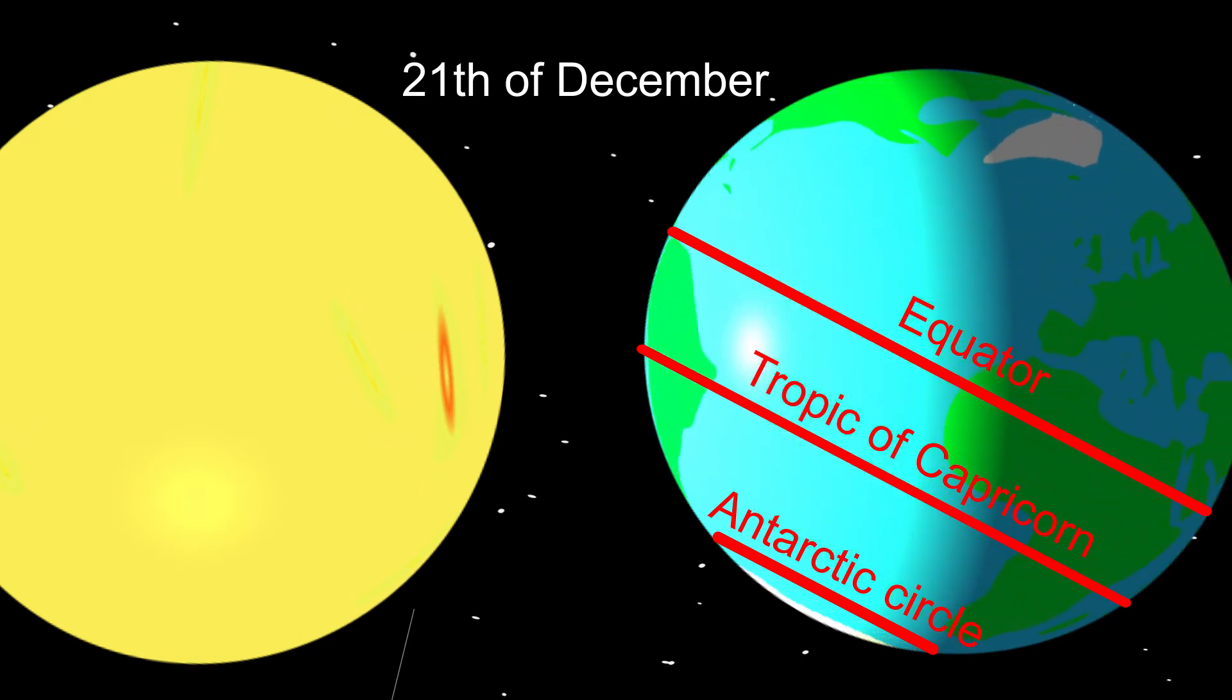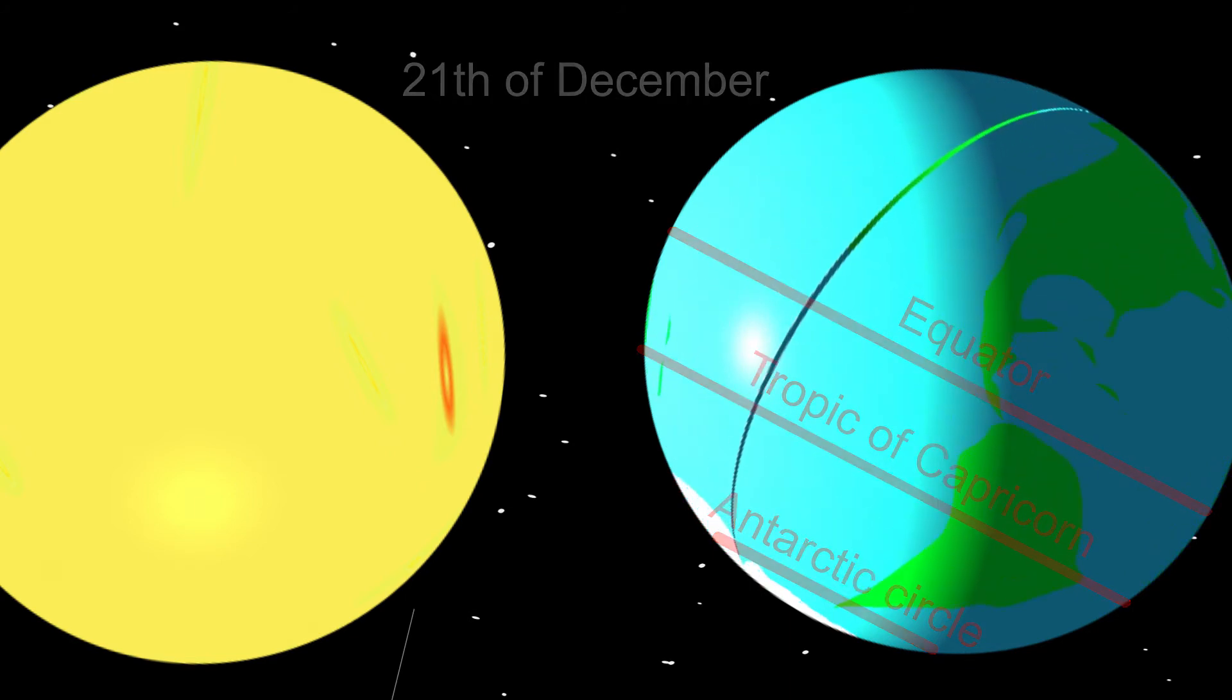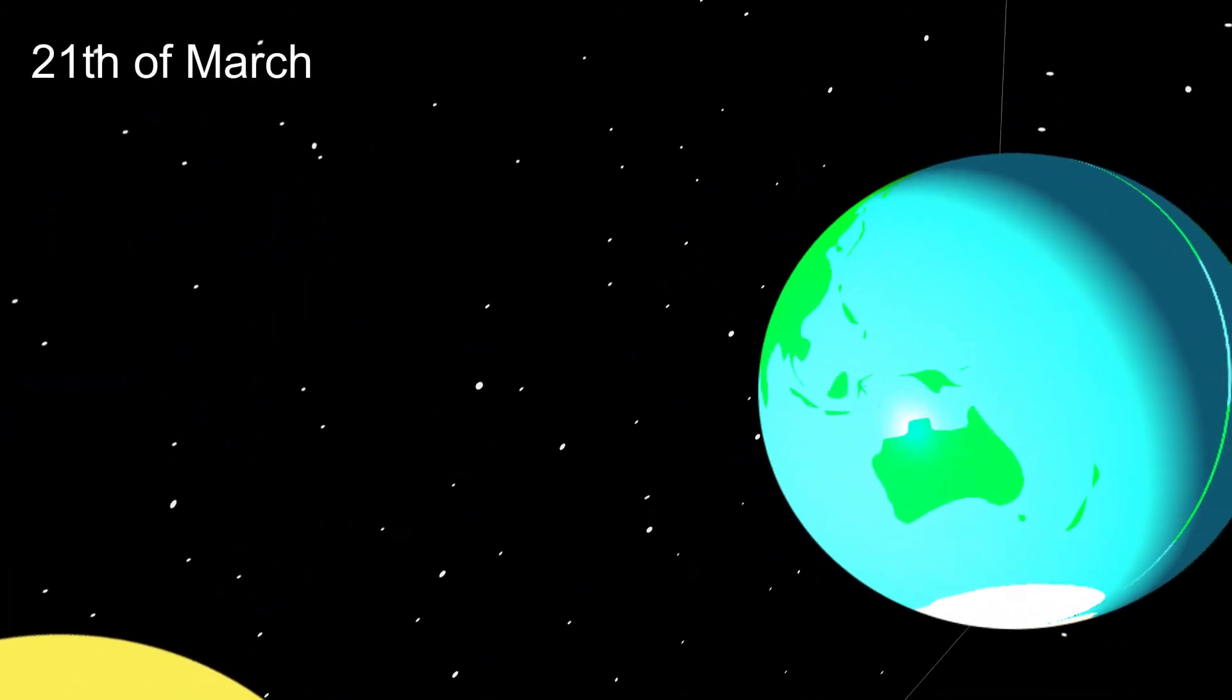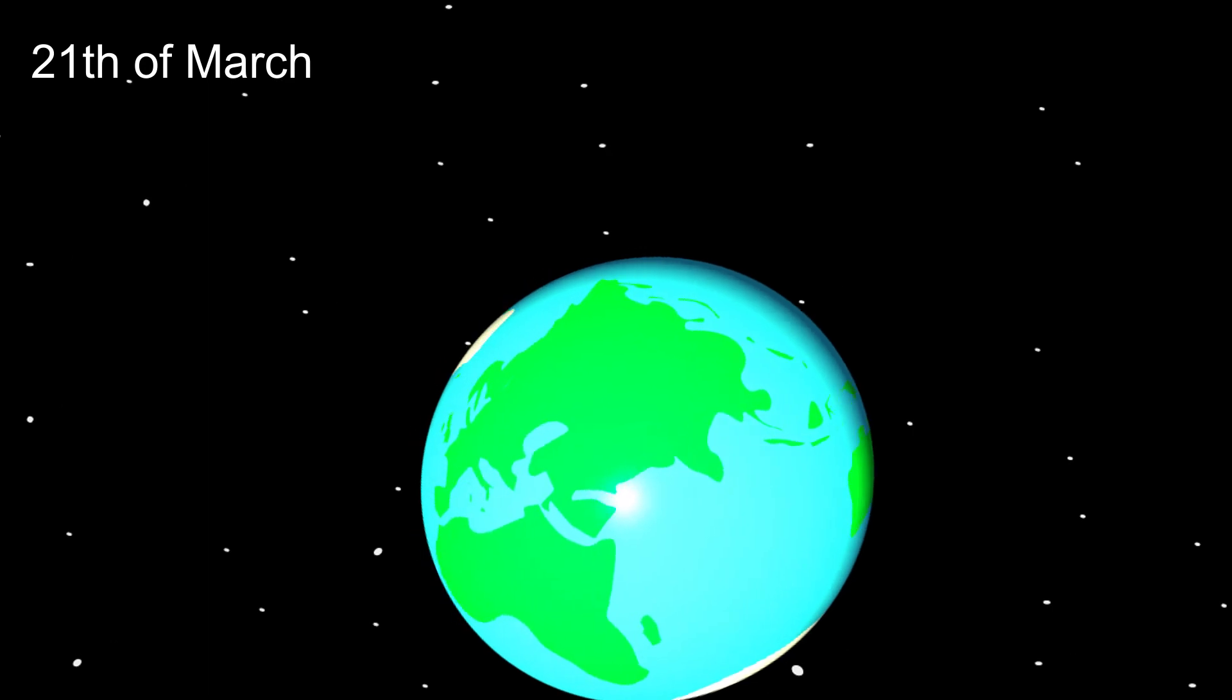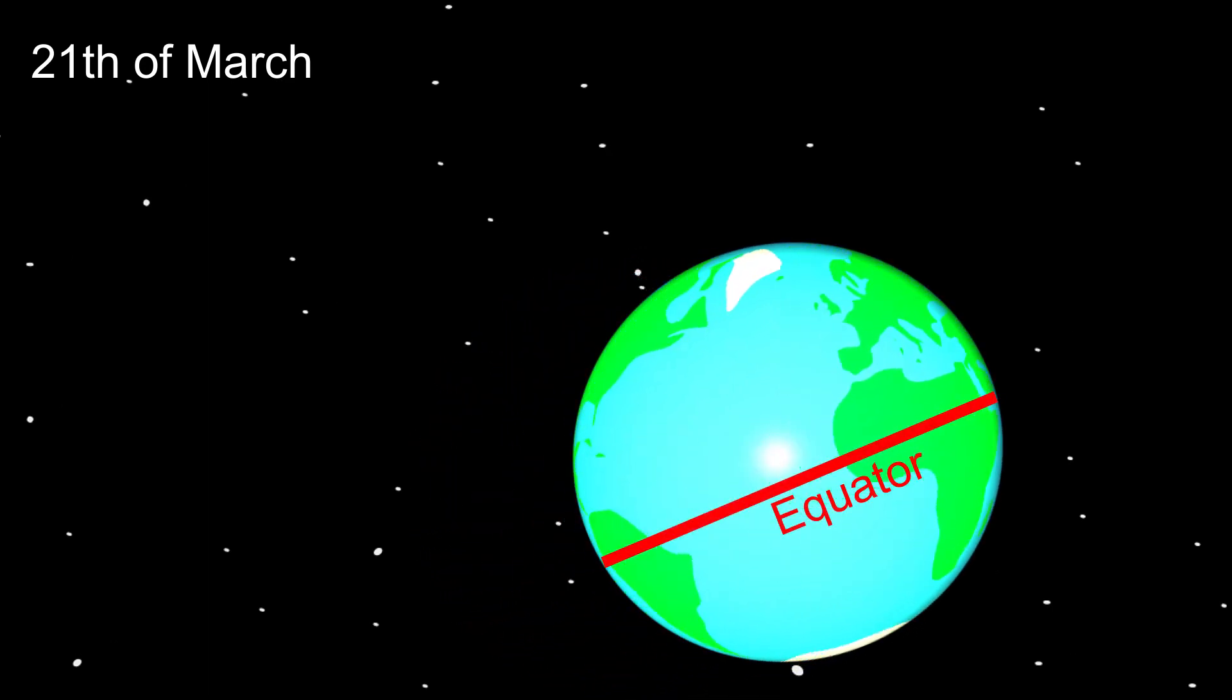Three months later, at the 21st of March, the equator receives once again the most energy of the Sun. The summer at the southern hemisphere ends, while spring starts in the northern hemisphere. So, the tilted axis of the Earth causes the seasons to exist.